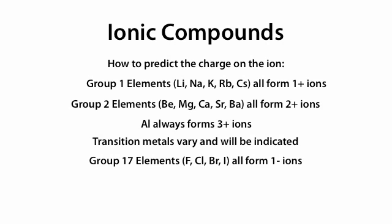Group 17 elements, which include F, Cl, Br, and I, all form 1- ions. Oxygen and sulfur always form 2- ions.